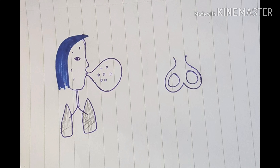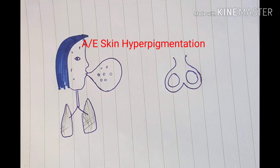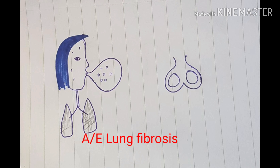Blowing a testis is stigmatizing, so there is a skin rash — a stigma on his skin. He's also hiding beneath a hood, which should remind you of Hodgkin lymphoma, for which it is also used. So bleomycin is used in testicular cancer and Hodgkin lymphoma, and the adverse effects are skin hyperpigmentation and pulmonary fibrosis.